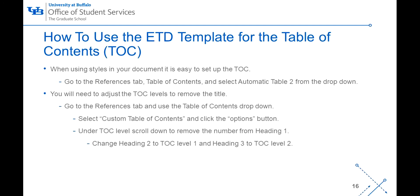When using styles in your document, it is easy to set up the table of contents. Go to the References tab, Table of Contents, and select Automatic Table 2 from the drop down. The difference between Automatic Table 1 and Automatic Table 2 is the title — Table 1 uses "Contents" while Table 2 uses "Table of Contents." You will need to adjust the Table of Contents level to remove the title Heading 1. Go to the References tab, use the Table of Contents drop down, select Custom Table of Contents, and click the Options button. Under TOC Level, scroll down to remove the numbering from Heading 1, change Heading 2 to TOC Level 1, and Heading 3 to TOC Level 2. Once set, your Table of Contents should automatically adjust. If you make any changes to your headings or page numbering, you will want to update the Table of Contents.